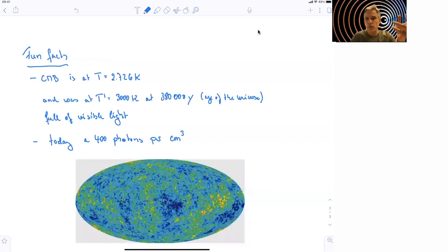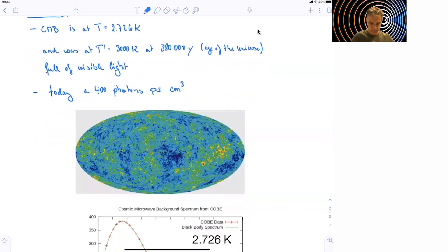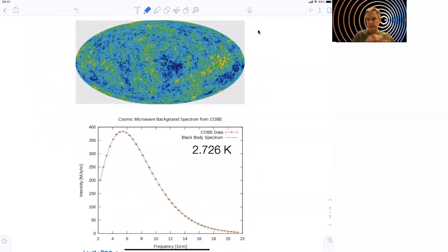Today, we have about 400 of those photons, microwave photons, per cubic centimeter. So it's quite a busy environment around here, but this little cube has about 400 of those photons. So this is a spectrum as well. It's not just a monochromatic background, but it's a spectrum which corresponds to this temperature.